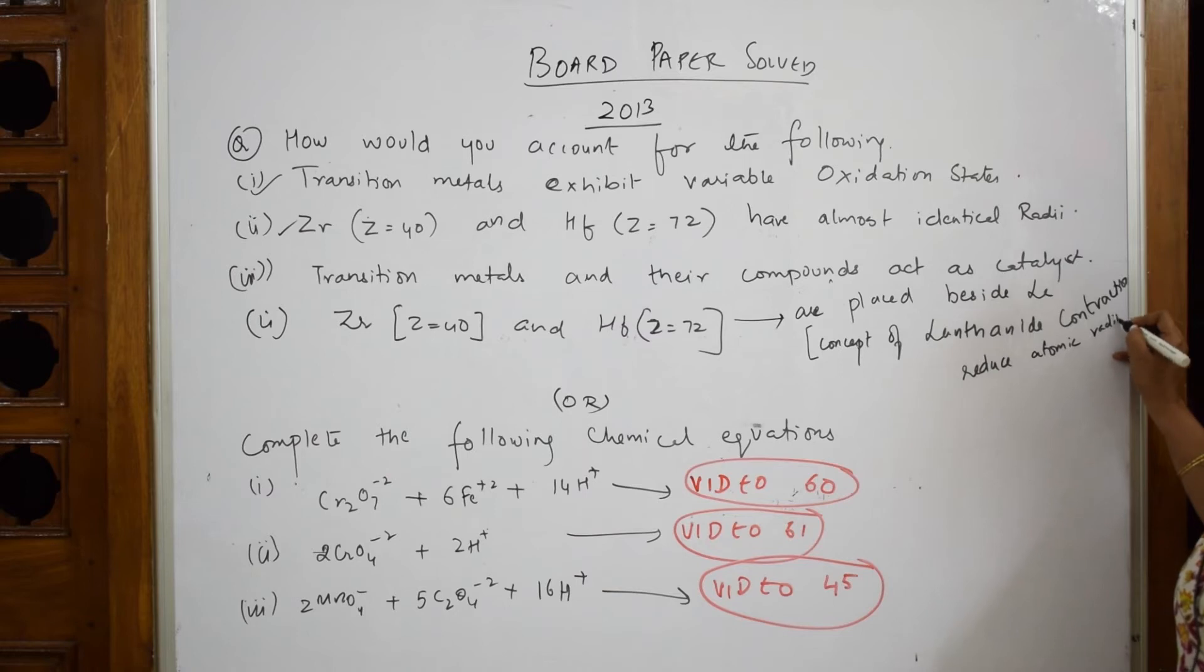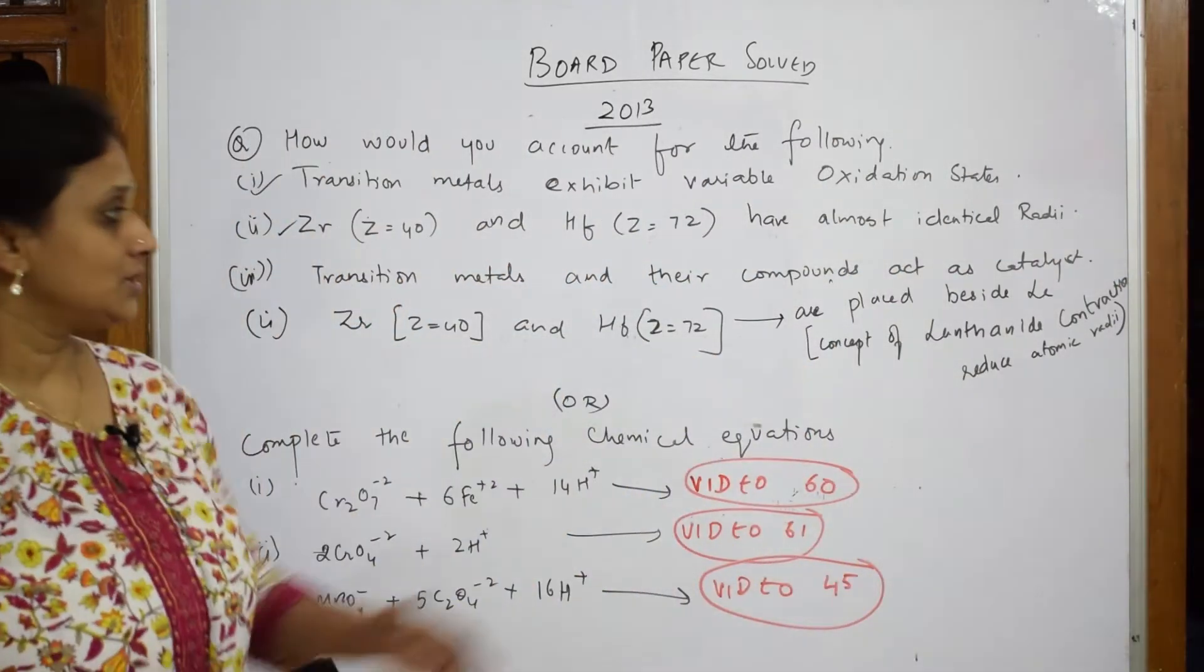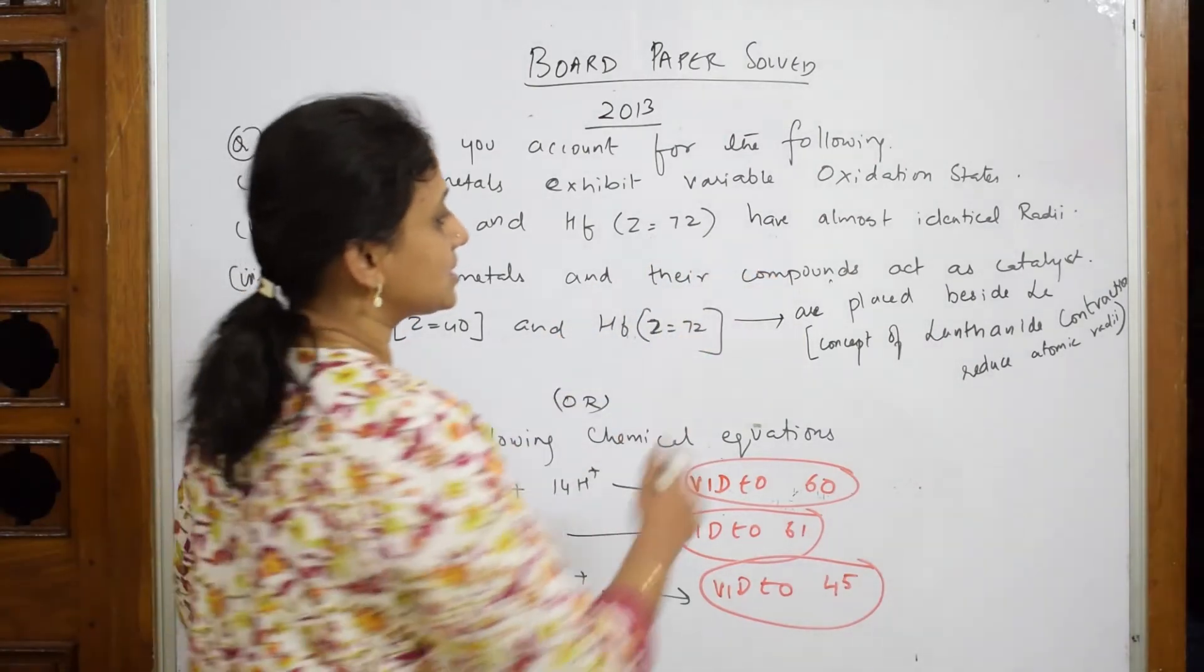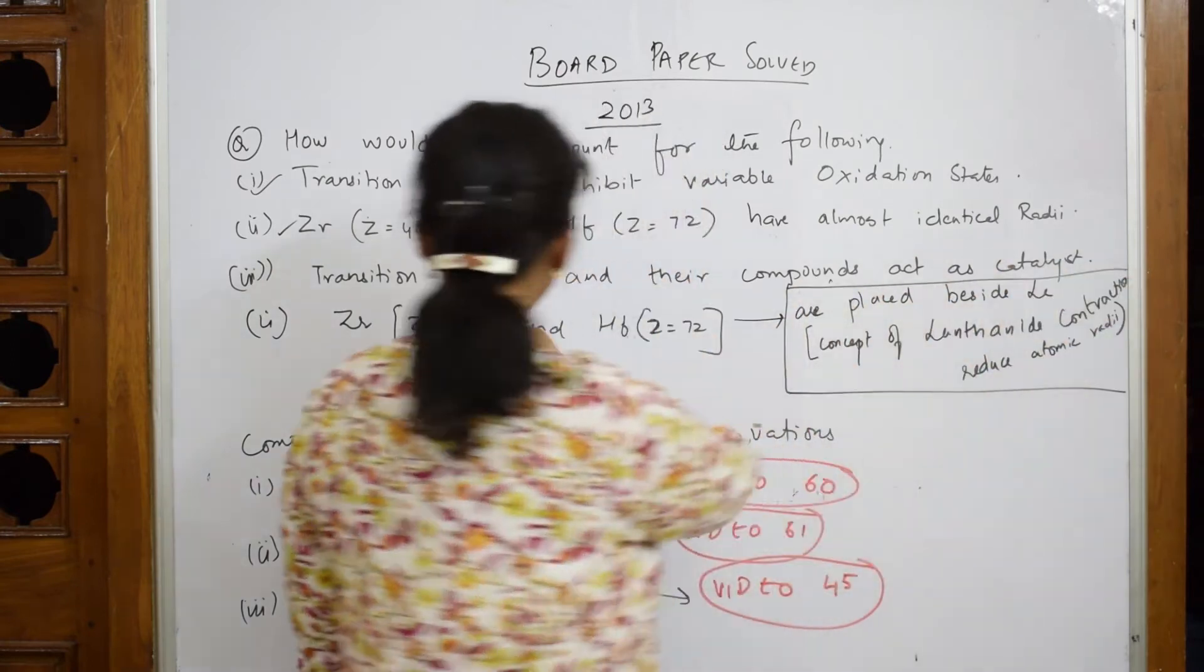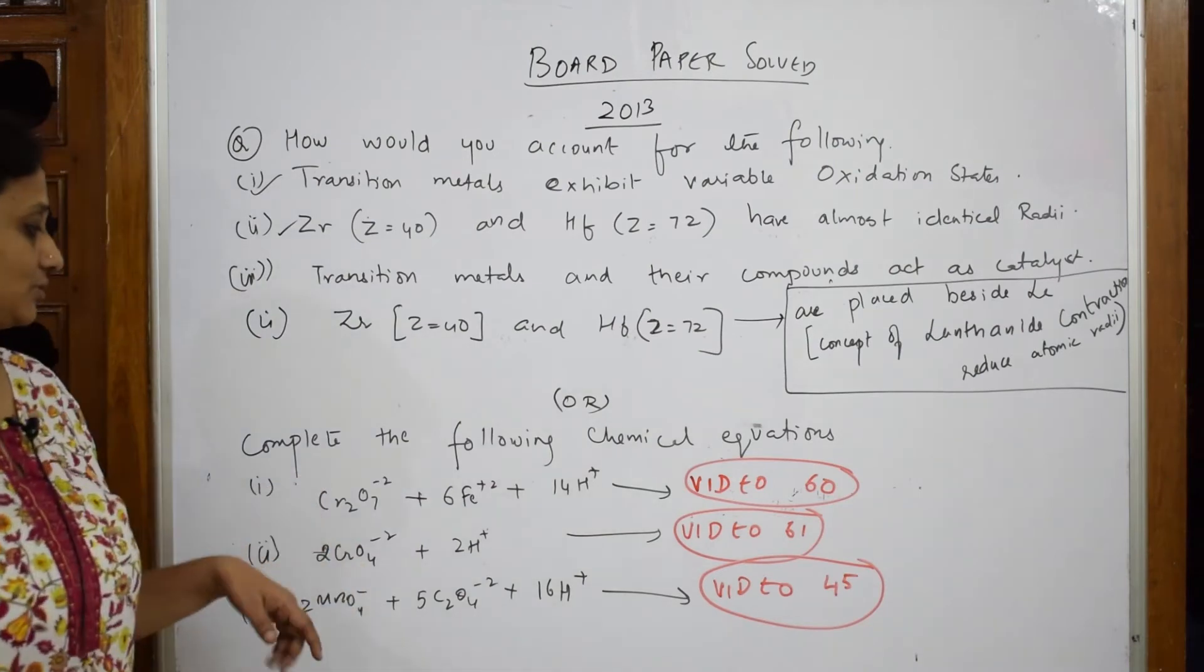So concept of lanthanide contraction exists. Now this is important. Are placed beside lanthanum. The effect is carried out in these also. So that's why size is reduced. Now let us come back. Complete the following.